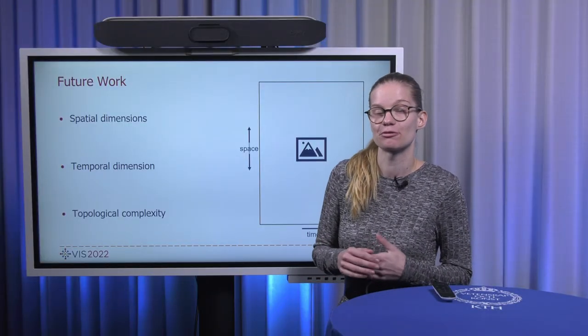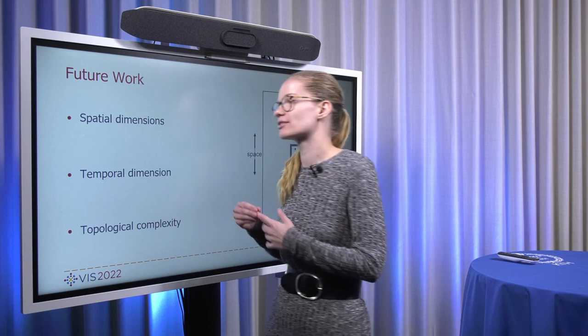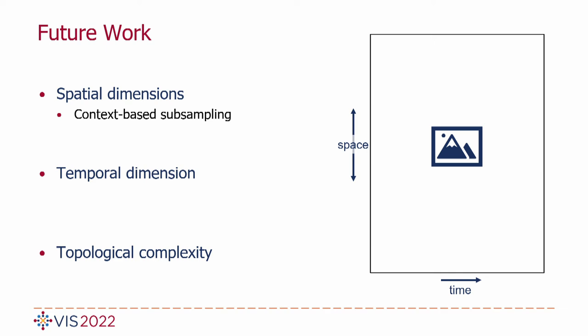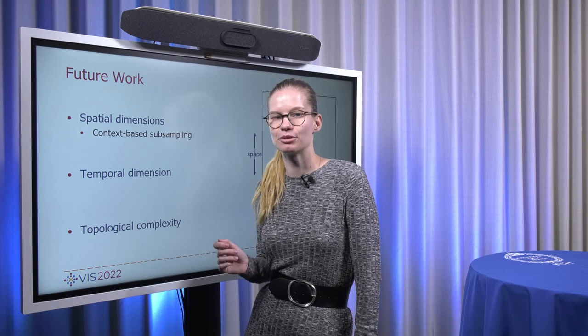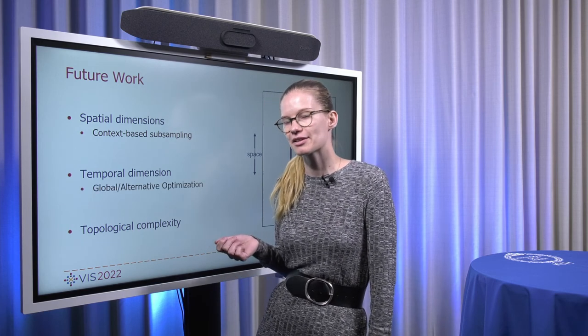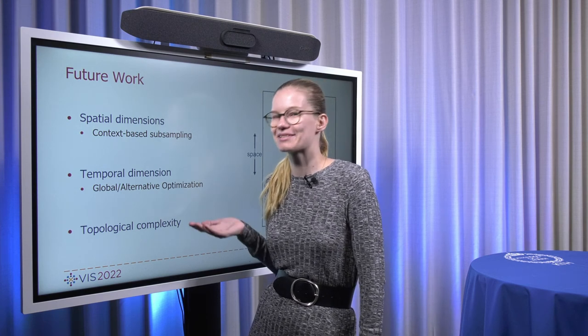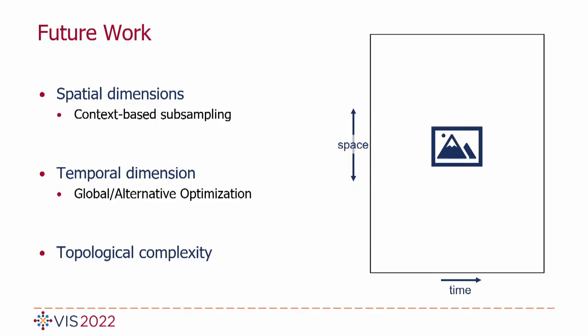We also have some ideas of where to take the method in the future and what to improve. And these are related to the three sources of complexity that we can have in a dataset. We think that we can still be smarter in the subsampling. For the temporal dimension, we currently do a time step per time step based optimization, but it would be really interesting to look at a global view on that. Although, since the problem is still NP-hard, that may be difficult. And finally, for topological complexity, it would be really interesting to explore a temporally aware simplification of the data. Because what happens now, if you really aggressively simplify your data, it can happen that you simplify out a feature in one time step, but not in the next, giving you a temporally really incoherent visualization.